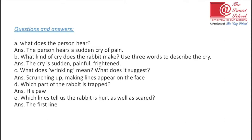Number c: what does 'wrinkling' mean? What does it suggest? We have already done the meaning of this word. The answer is: scrunching up, making lines appear on the face — the lines that appear on the face are called wrinkles, so wrinkling means that. Number d: which part of the rabbit is trapped? The rabbit was caught in a snare, so the part that got trapped was his paw. The answer is: his paw was in the trap.